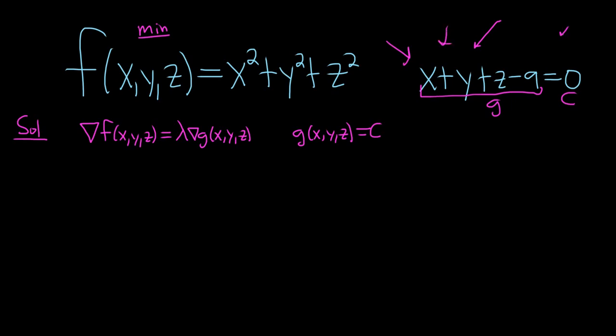Recall the gradient of f is the vector consisting of the first order partial derivatives of f. So the first component is the partial with respect to x, the second component is the partial with respect to y, and the third component is the partial with respect to z.